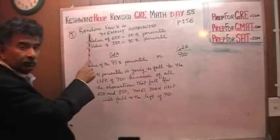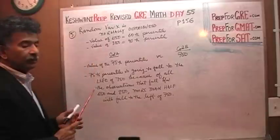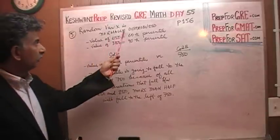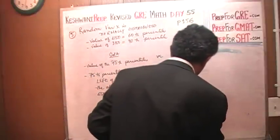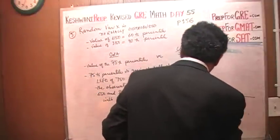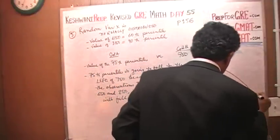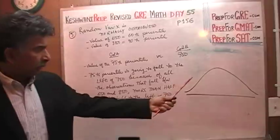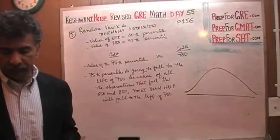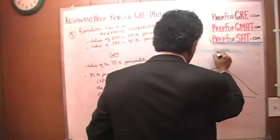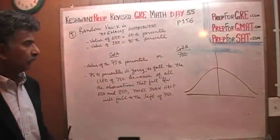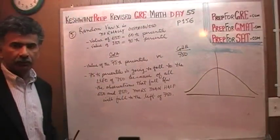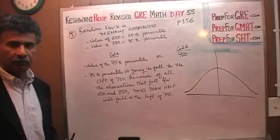We have a random variable X which we are told is normally distributed. So let's show a normal distribution first. We have a normally distributed variable, they are calling it X. There is our median, our mode, our mean, whatever you want to call it. Because in the case of normal distribution, all of those three values will be equal because it is symmetric.